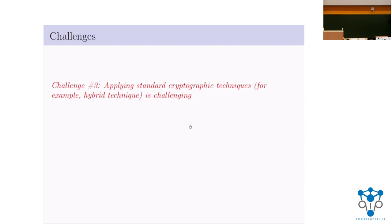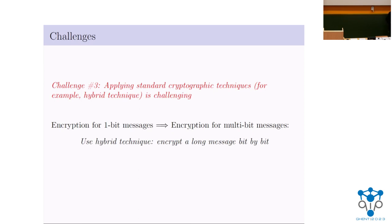The third challenge is that standard cryptographic techniques like hybrid arguments don't seem to work in the Unclonable Indistinguishability setting. For example, if you have encryption for one-bit messages and want to convert it into encryption for long messages, the standard approach is to encrypt bit by bit and use a hybrid argument. But this fails in the unclonable setting — not just as an artifact of the proof, but the resulting scheme is actually insecure even if you started from a secure scheme.